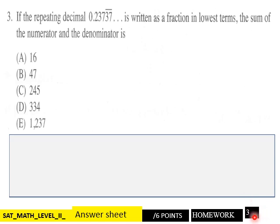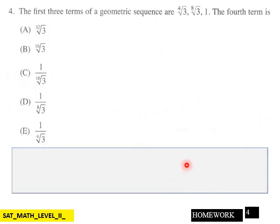Page four: the first three terms of a geometric sequence are the fourth root of three, the eighth root of three, and one. The fourth term would be which one of these? You got six points here, page four.